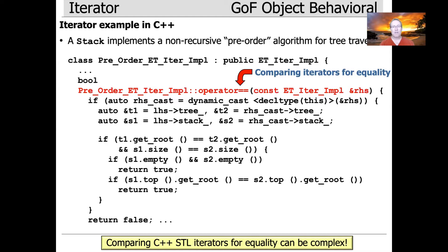This is a really clever generic program that is going to take the right-hand side and downcast its address to see whether it's actually the left-hand side. This all has to do with the way that C++ inheritance works with covariance of overloaded operators. In this case, we're passed a reference to the base class ET iter impl, and we need to first check that this is actually a reference to something of the same type as our derived class — pre-order ET iter impl. We use a dynamic cast to cast the right-hand side to see if it's the same type as the left-hand side.